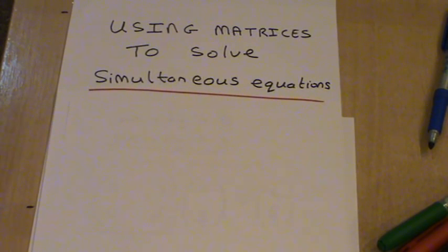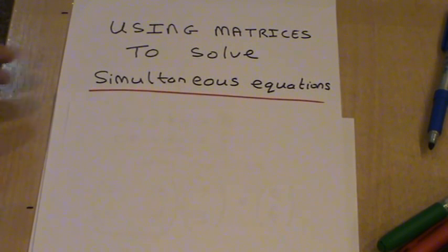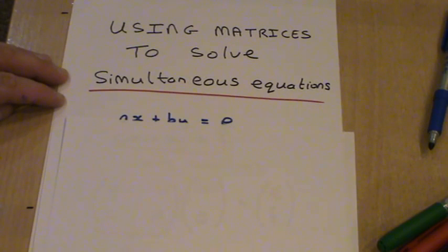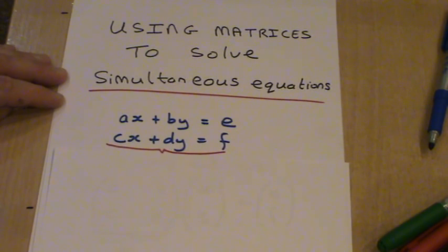Here we're going to look at using matrices to solve simultaneous equations. Now here we've got two equations, they're linear equations. We've got ax plus by equals e, and we've got cx plus dy equals f.